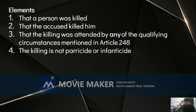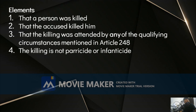The elements of murder are: first, a person was killed; second, the accused killed that person; third, the killing was attended by a qualifying circumstance; and fourth, the killing does not fall under parricide or infanticide. Even if fire, poison, or cruelty was used — if the victim is under 3 days old, it is infanticide, not murder. And if the victim is a legitimate parent, it is parricide, not murder. When the circumstances of parricide and infanticide are present, they prevail over murder.